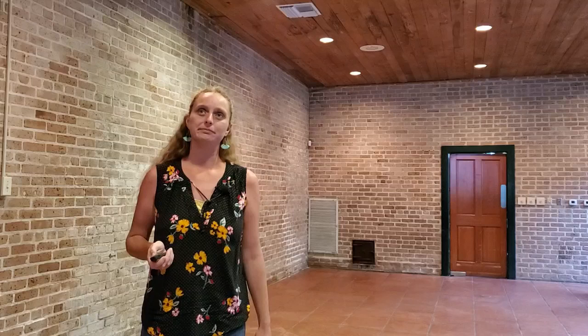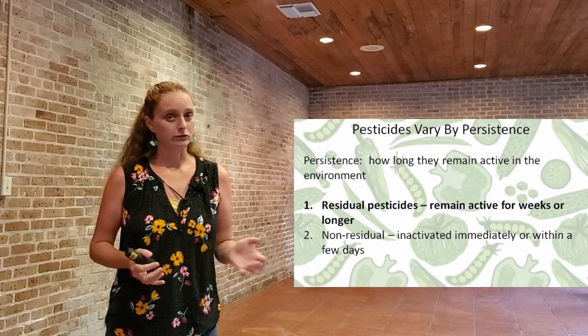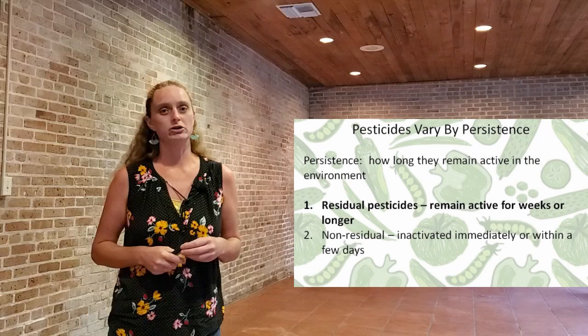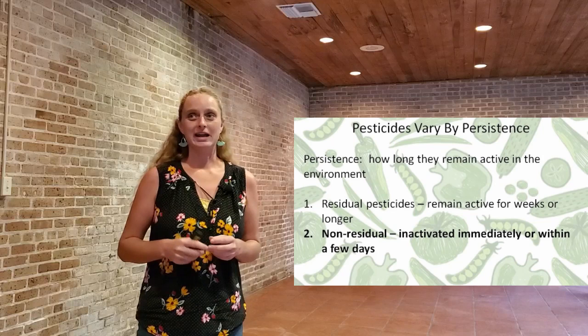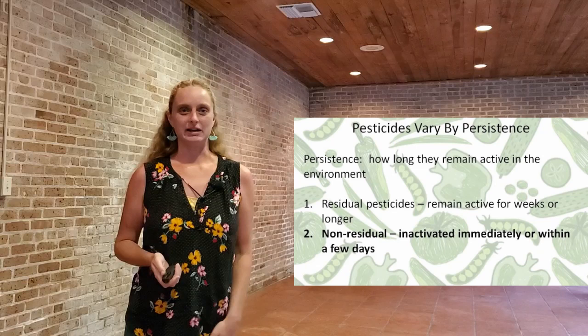Pesticides also vary by persistence, or how long they remain active in the environment. Residual pesticides remain active for weeks or longer. A common one in our gardens would be Preen or any kind of pre-emergent herbicide that we might use in flower beds. Non-residual pesticides are inactivated immediately or within a few days. Some products break down when they encounter sunlight — the UV light breaks them down. Microorganisms can also break down a lot of pesticides.